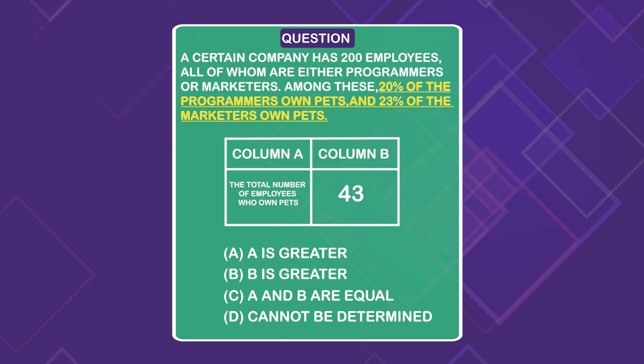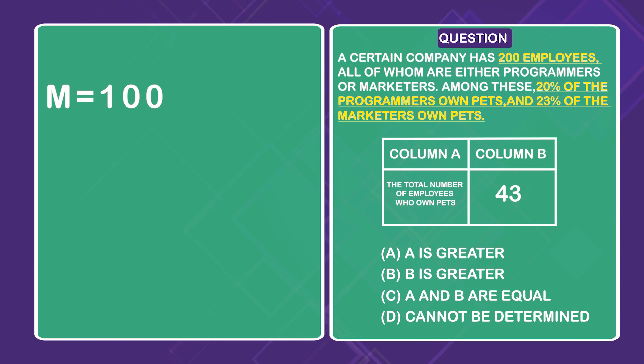Because we know there's only 200 total employees and we can't have zero number of employees, we know that there has to be 100 total marketers. Because our only other option would be 200, which would leave us no employees left to represent our programmers. If there are 100 total marketers, that means there has to also be 100 total programmers to equal the total 200 employees at the company.